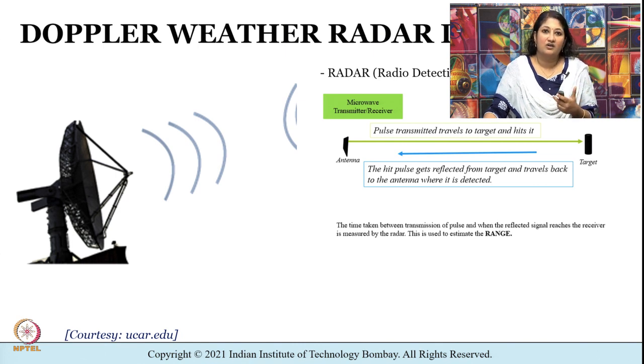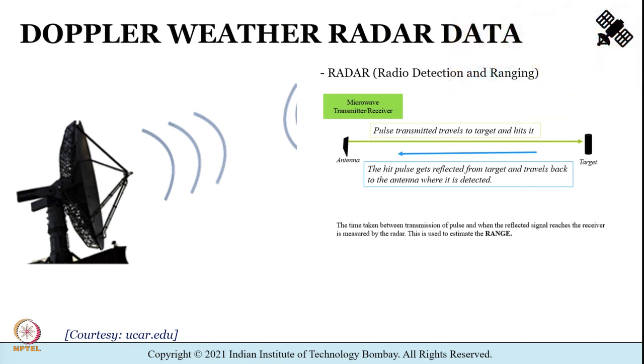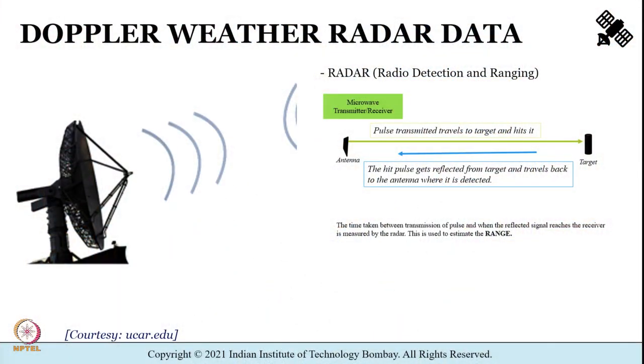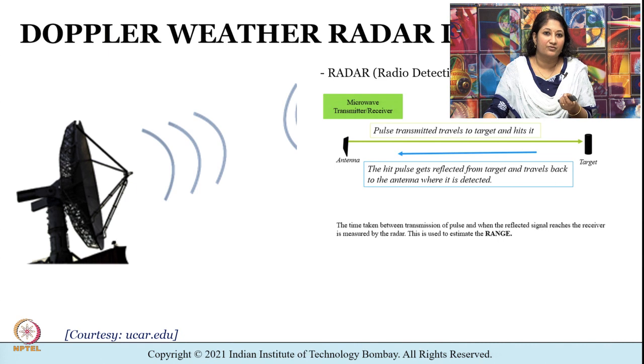DWR data also gives us information about thunderstorms and cyclones because they operate in the microwave region of the electromagnetic spectrum — hence included as part of this tutorial. These microwave radiations from DWRs give us the three-dimensional profile of clouds and the ability to see through clouds and measure the severity and intensity of rainfall.